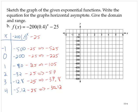And so now let's plot those points. Negative 1, negative 525. Zero, negative 225. One, negative 105. Two, negative 57. Three, negative 37.5. Four, negative 30.12.